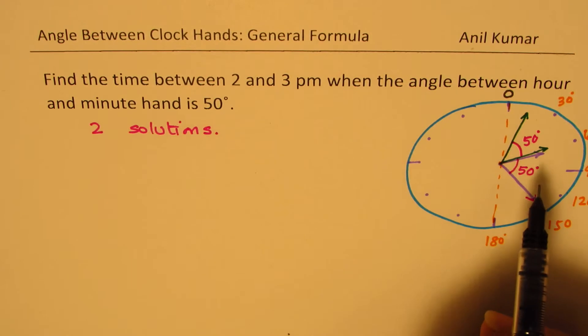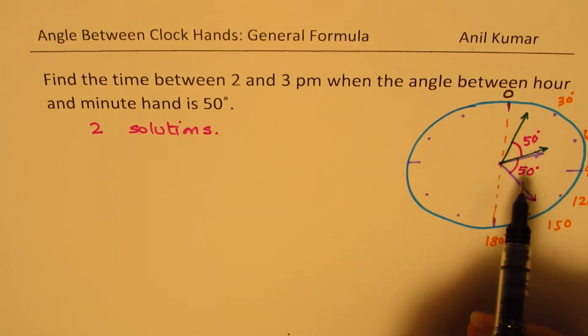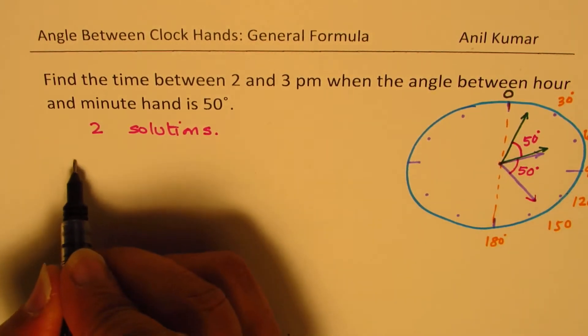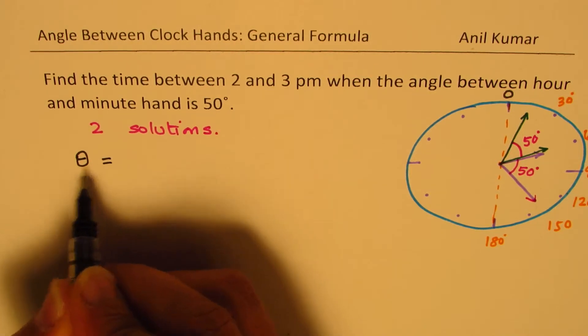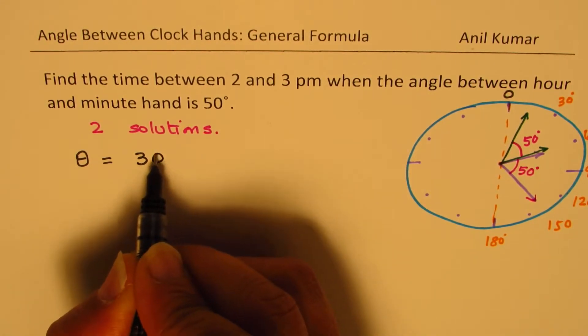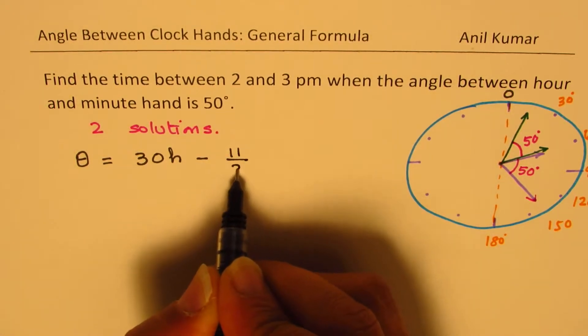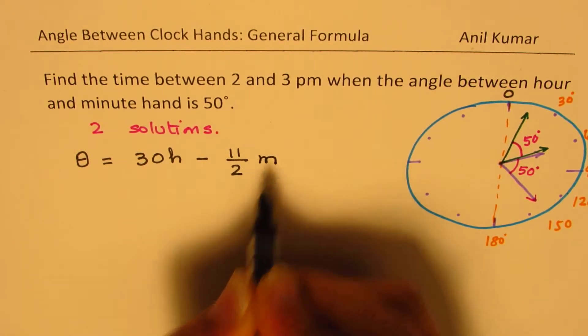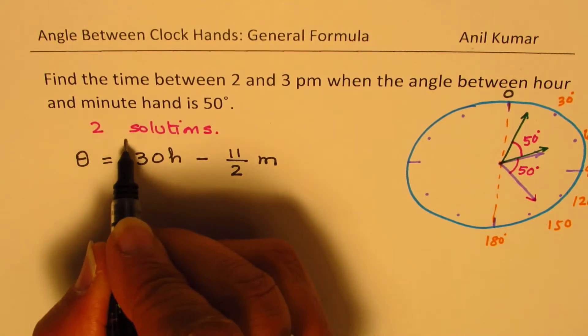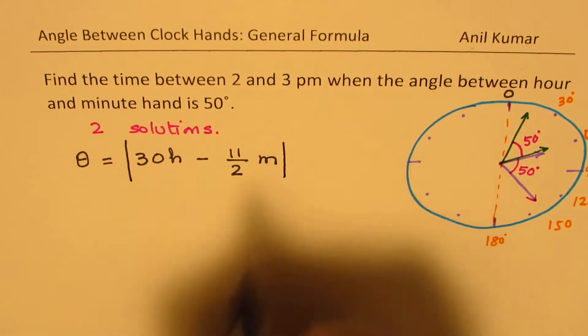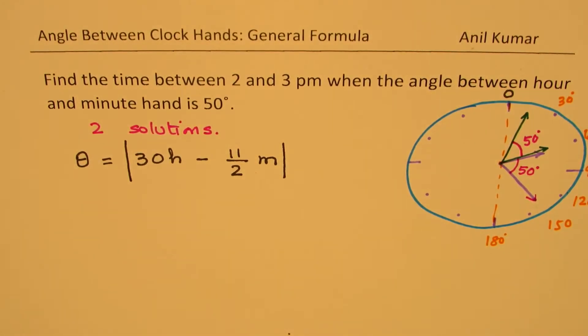Now, we also know from the speed of hour and the minute's hand that the angle can be given by the formula theta equals to 30 times H minus 11 by 2 times the minutes. And this angle is always positive, so we take a positive value. That is the absolute value of this, right?